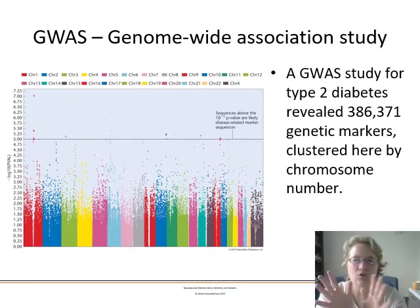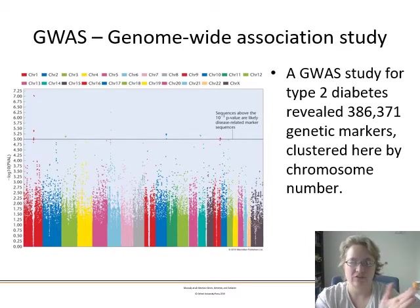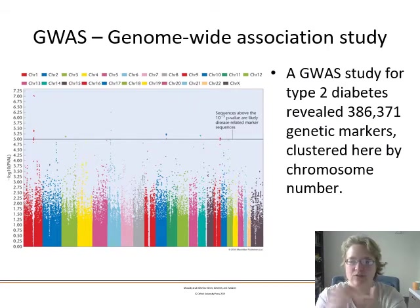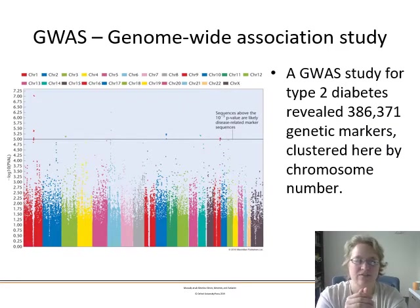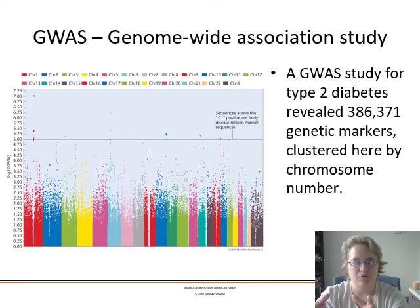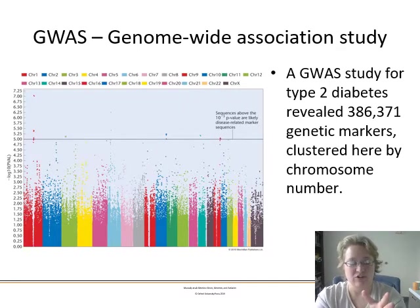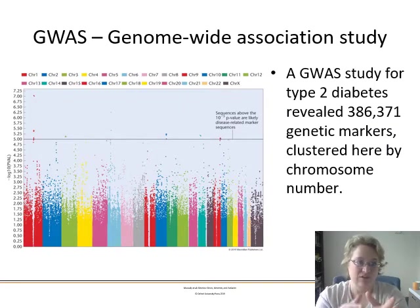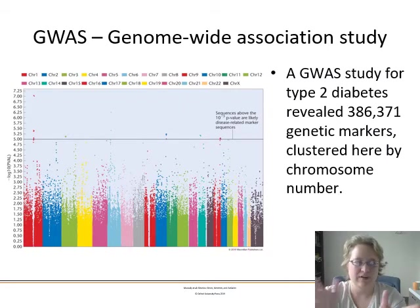A GWAS done for type 2 diabetes reveals all these genetic markers people have in common. There's a threshold — p-values around 10 to the minus 5 — and a few markers rise above that critical threshold. Those are targeted as potential ideas for gene therapy, or as proteins whose absence when the gene is broken could serve as a medicinal treatment. Results are shown by chromosome number in what's called a Manhattan plot.